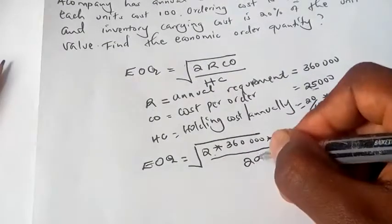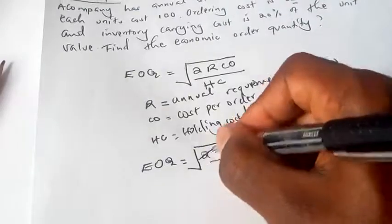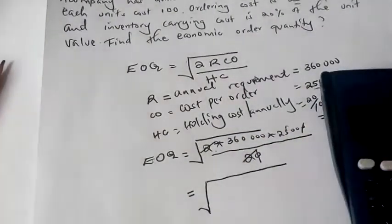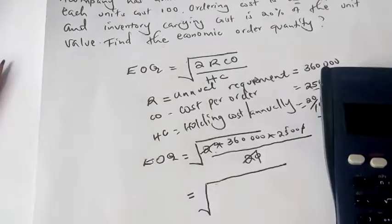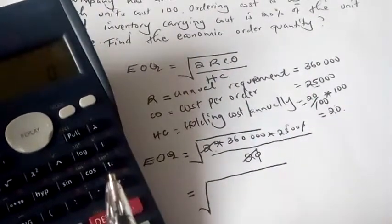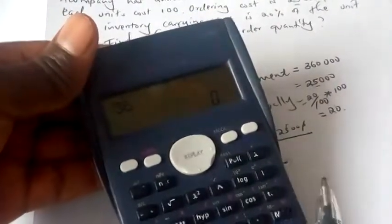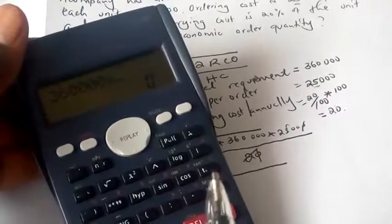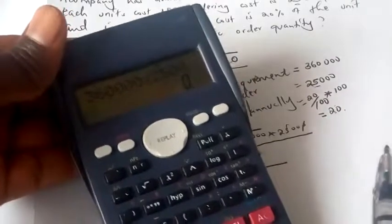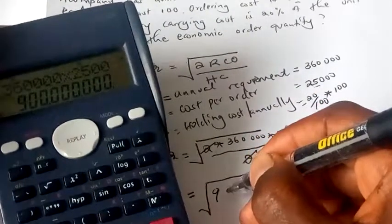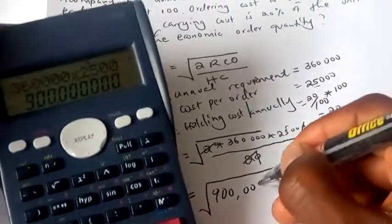So doing the normal computation, two goes with two, so we'll have square root of 360,000 multiplied by 25,000, which is equal to 900,000,000. Then I get the square root of this.